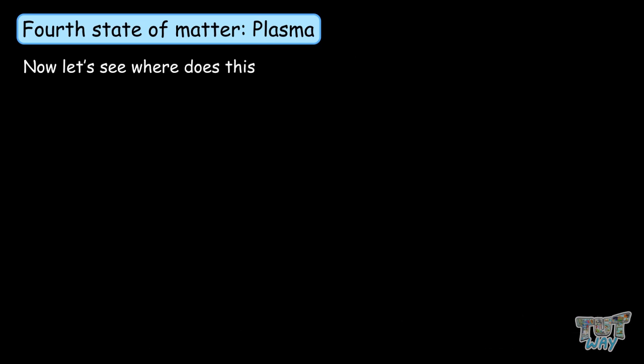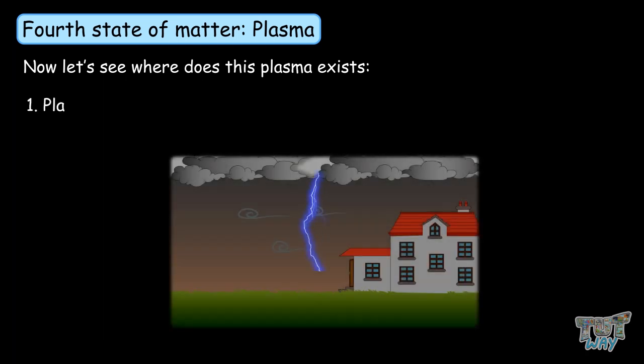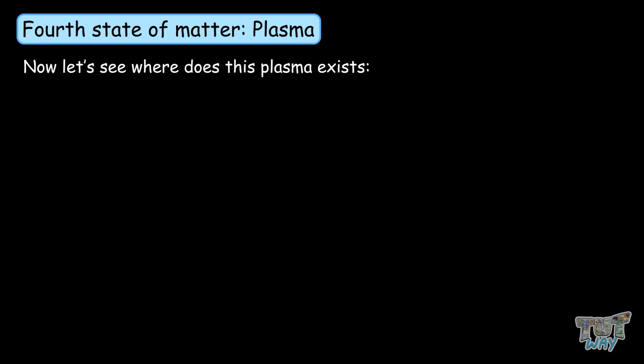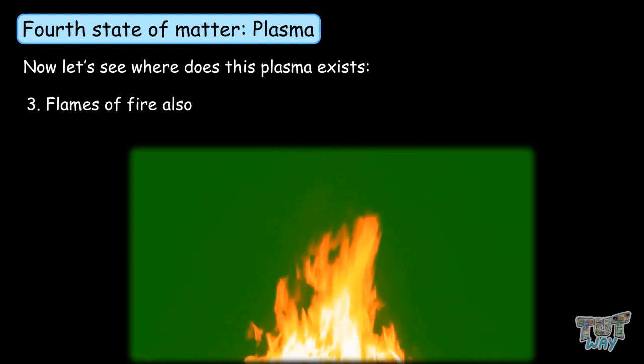Now, let's see where plasma exists. Plasma naturally exists in lightning, northern and southern lights which are called auroras, and flames of fire also have plasma.